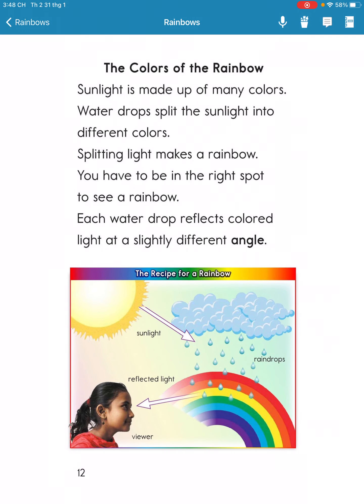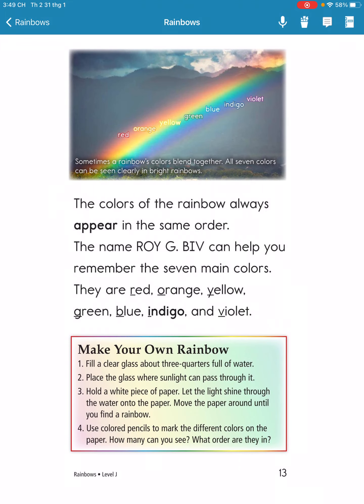Sunlight is made of many colors. Water drops split the sunlight into different colors. Each water drop reflects colors of light at a slightly different angle. The colors of a rainbow always appear in the same order.